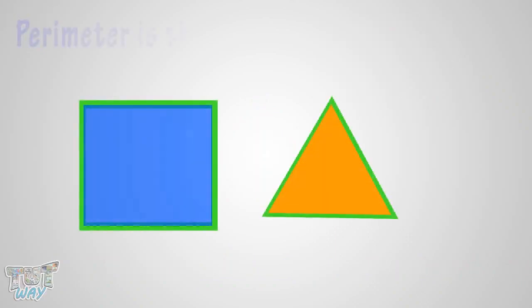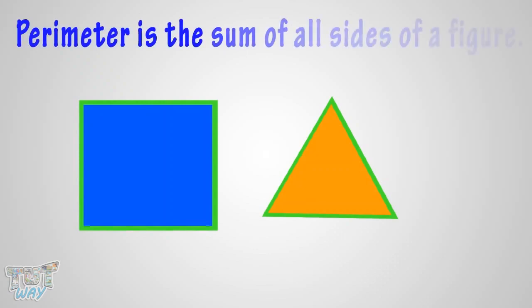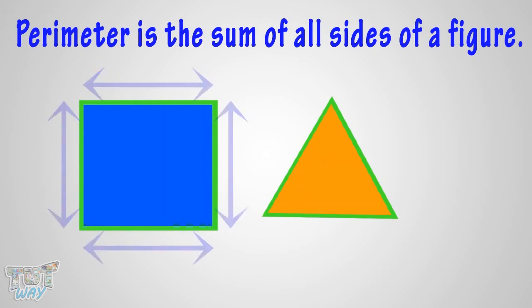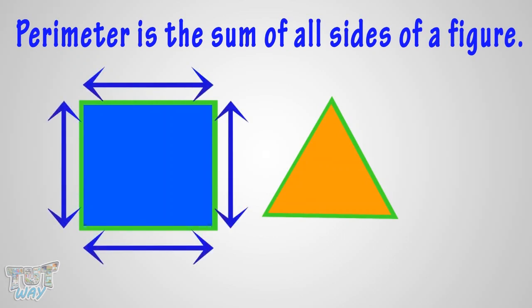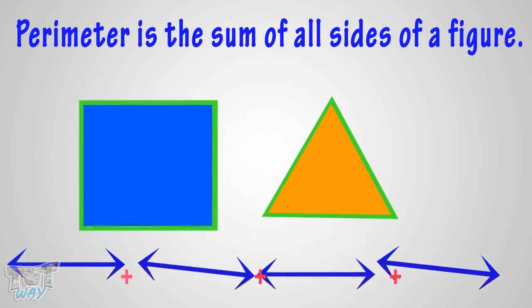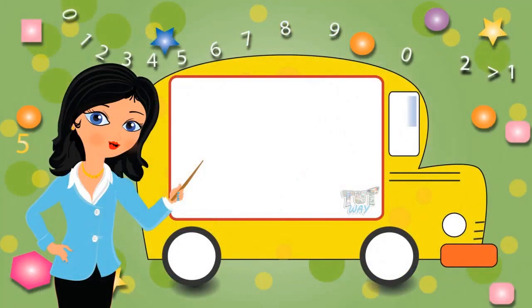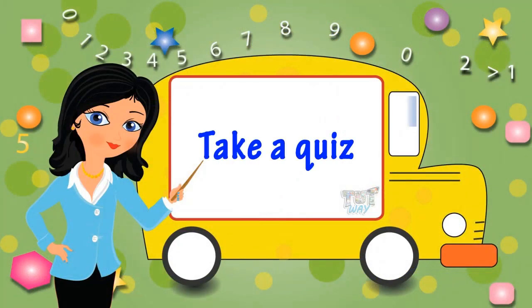So what have we learned? We have learned that perimeter is the length of the boundary of a closed figure, and we calculate it by adding the length of all sides of a closed figure. Now you may go ahead and take a quiz to learn more.